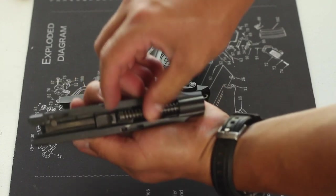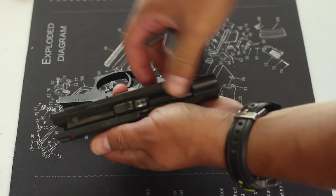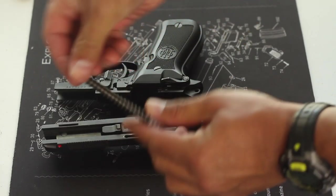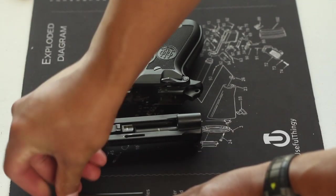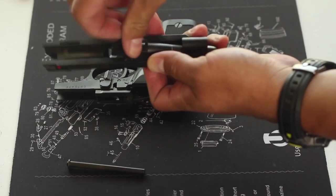Now remove the recoil spring guide rod and barrel by depressing the spring from chamber into muzzle end. Pull it left to right, it'll come right out. Remove the guide rod from the spring and the barrel should come right out when you push on the top of the slide.